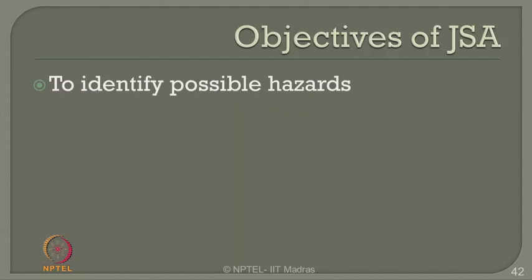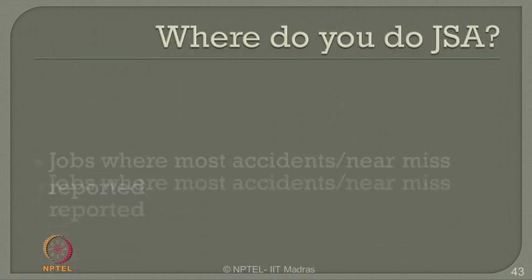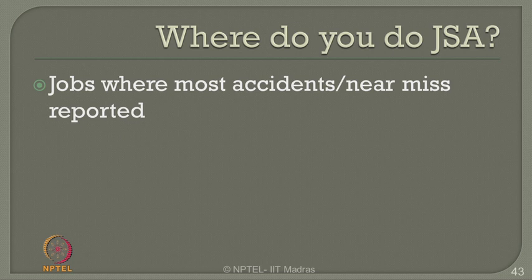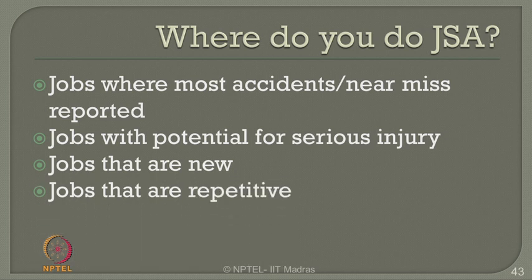JSA can provide pre-job instructions on irregular jobs — it projects different hazardous situations not otherwise anticipated in safety planning. It is a benchmark for accident investigation and reduces accidents in a given plant. The essential objectives of JSA are to identify and eliminate possible hazards. Where should JSA be performed? On jobs where most accidents and near-misses are reported, jobs with potential for serious injury, jobs that are categorically new, and jobs that are repetitive — because repetitive jobs cause more accidents as people become complacent thinking they are experienced to handle the situation.